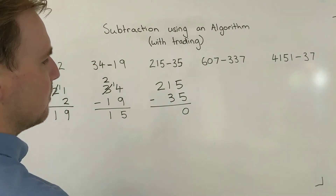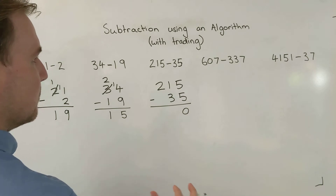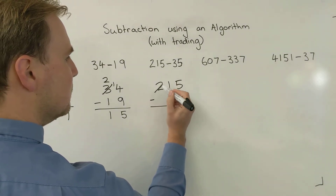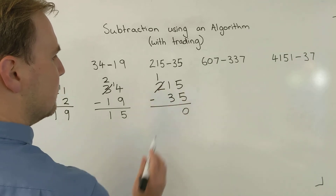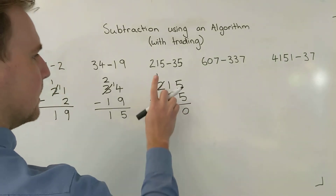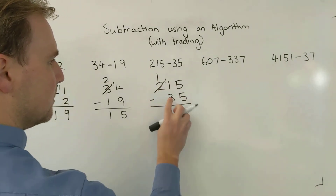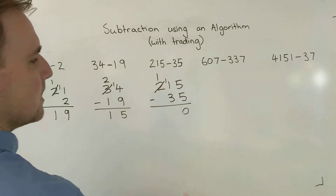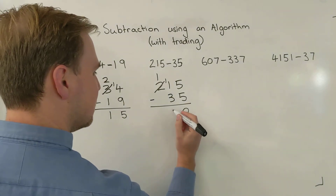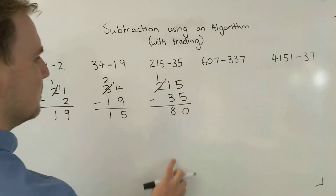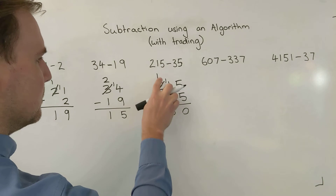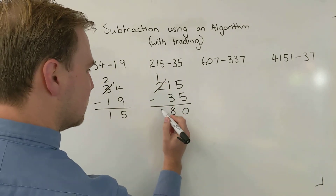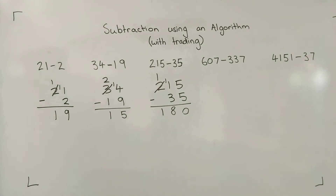1 take away 3 — here we are again, we need to trade. So I'll go to the next column along, cross that out — I'm taking one, that leaves one there — and put that one down here in the column. 11 take away 3 leaves me with 8. And now back to the hundreds column: 1 take away nothing, well that's going to leave us with just 1.